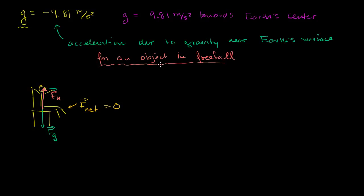I am not in free fall. And because 9.81 meters per second squared still seems relevant to my situation, but I'm not an object in free fall, another way to interpret this is not just as the acceleration due to gravity near Earth's surface for an object in free fall — maybe a more general way to interpret this is as Earth's gravitational field, or really the average gravitational field at Earth's surface, because it actually changes slightly throughout the surface of the Earth.